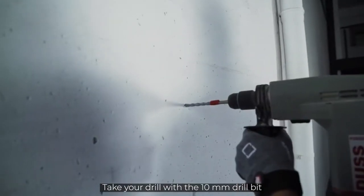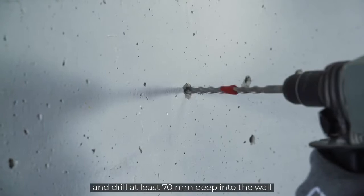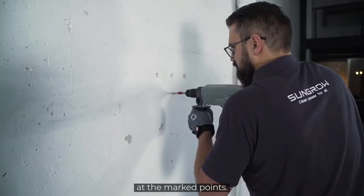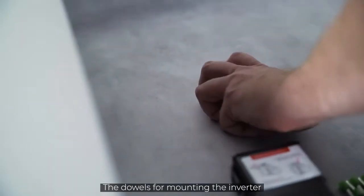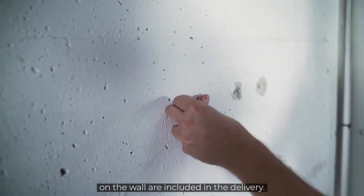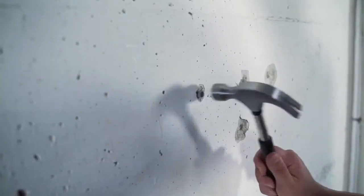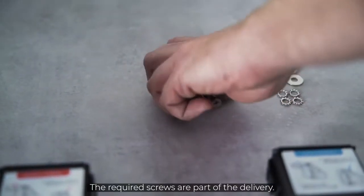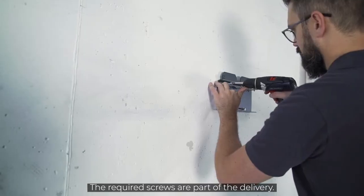Take your drill with the 10 mm drill bit and drill at least 70 mm deep into the wall at the marked points. The dowels for mounting the inverter on the wall are included in the delivery. You will also need a cordless screwdriver for attaching the mounting plate. The required screws are part of the delivery.